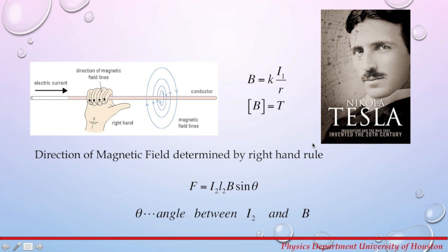The units for magnetic field are Tesla, named after Serbian scientist Nikola Tesla. The direction of the magnetic field is determined by the right-hand rule. If you grab the wire so that your thumb is pointing in the direction of the electric current, your fingers will curl in the direction of the magnetic field.